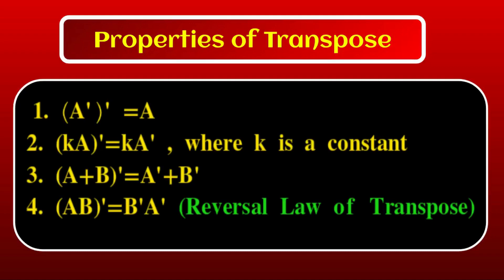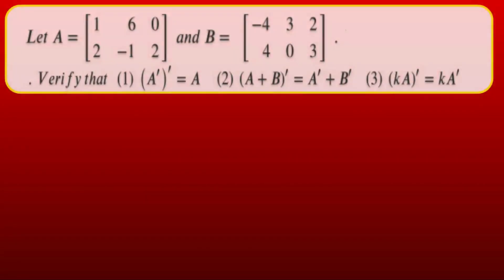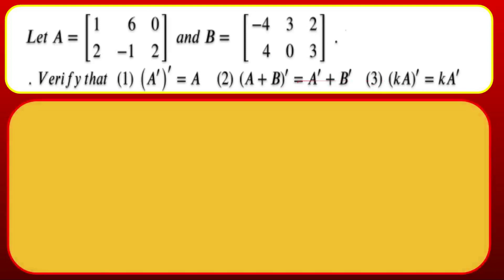Let's go to the problem. Let A = [[1, 6, 0], [2, −1, 2]] and B = [[−4, 3, 2], [4, 0, 3]]. Verify that (A^T)^T = A, (A+B)^T = A^T + B^T, and (kA)^T = k·A^T.